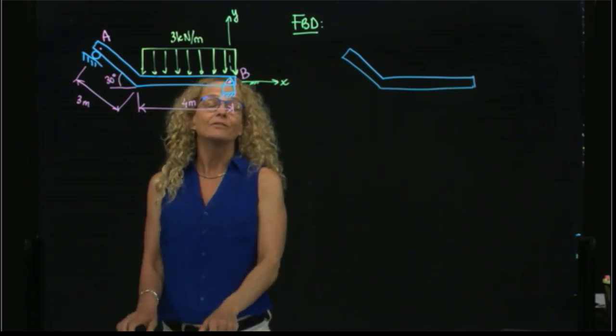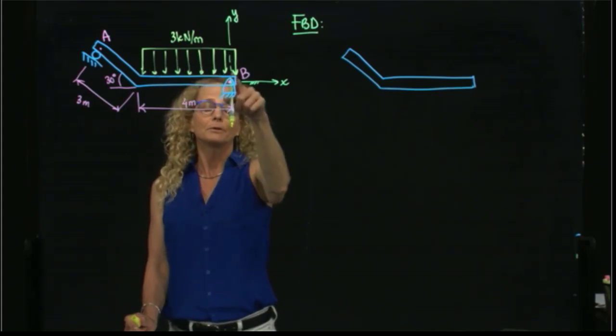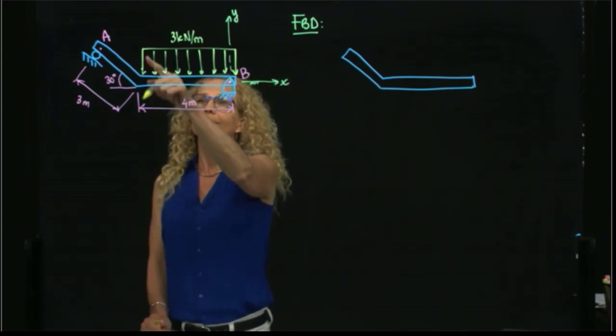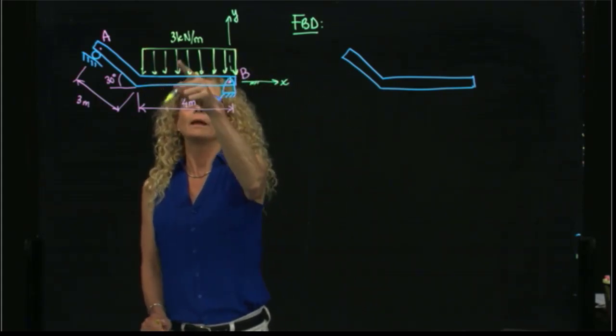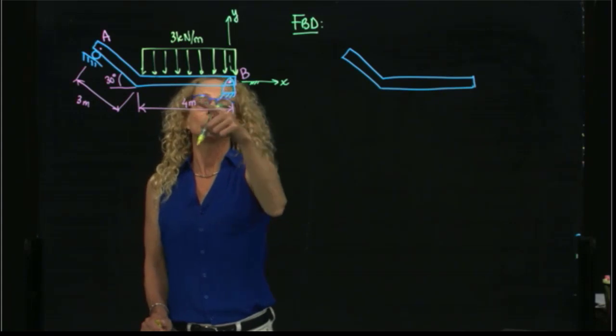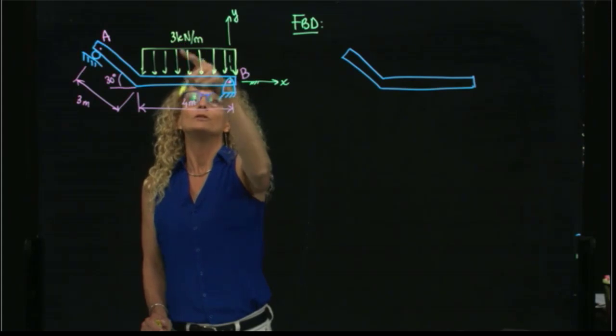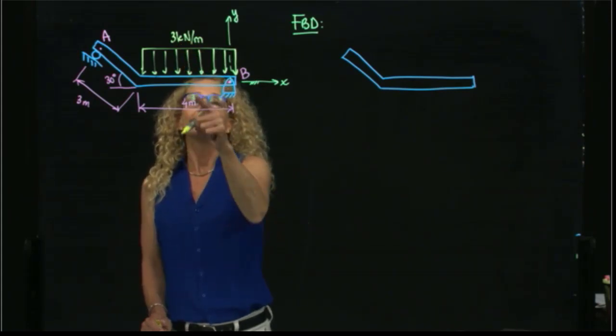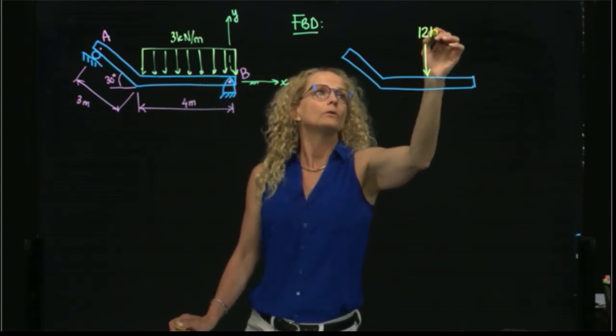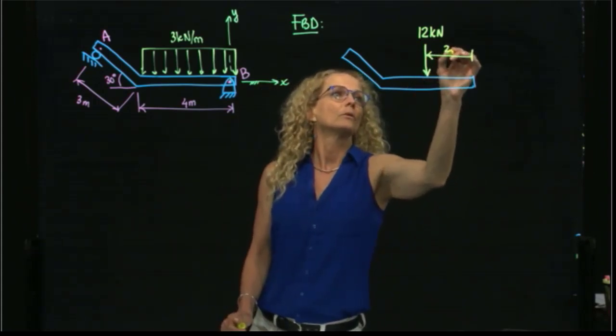I will put my active forces, this distributed force. A distributed force is equivalent to a concentrated force. In this case, since this is a constant force, it will be the area under this distributed force, which will be the base (4 meters) times the height (3 kilonewtons per meter), giving me 12 kilonewtons, and it will be located at half the distance. So this will be 12 kilonewtons, located at 2 meters.